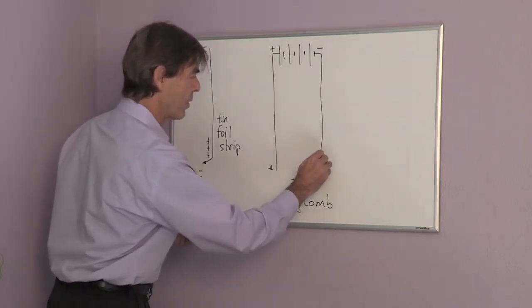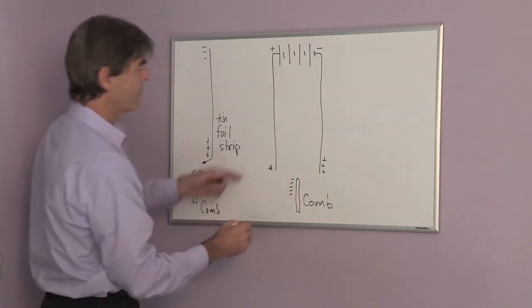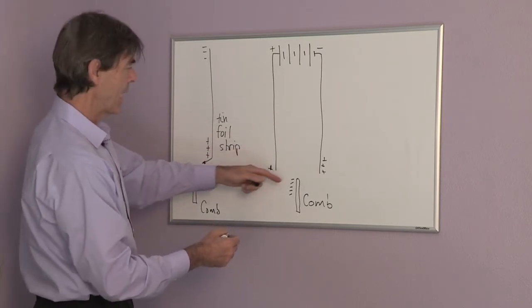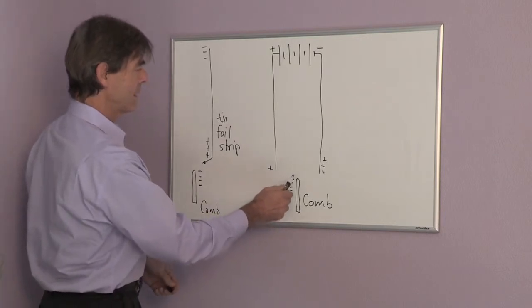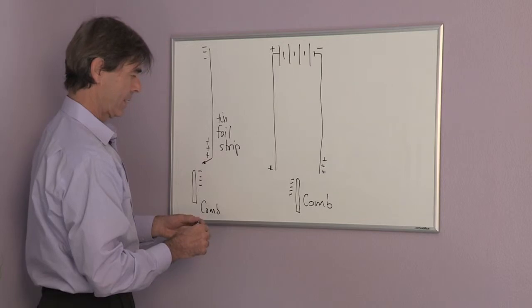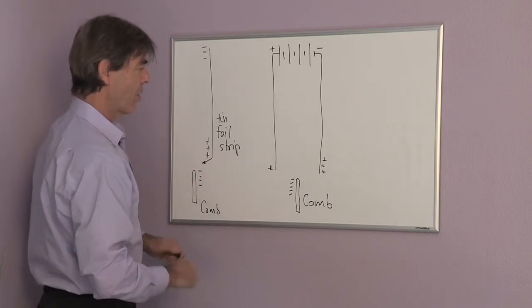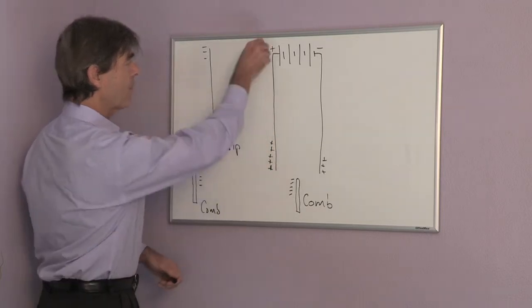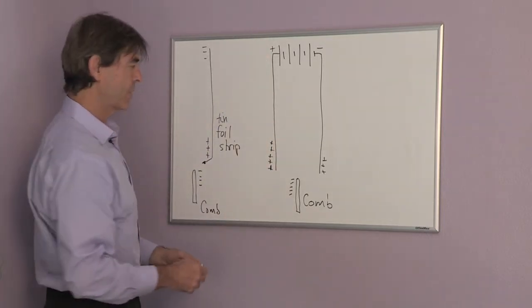Each of the strips become charged in the opposite manner, and they are attracted to the comb. But one is attracted stronger to the comb. And that is the one that is already positively charged, the positively charged side.